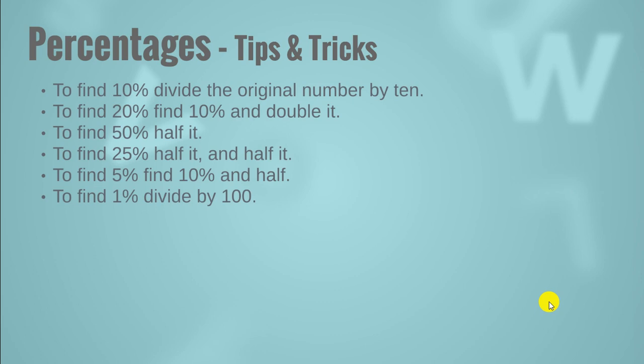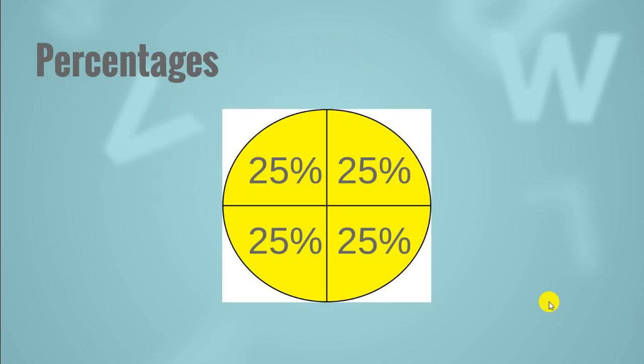To find 25%, half the value you get by finding 50%, which means that just divide it by 2 and then again divide it by 2. To find 5%, find 10% and then whatever the answer you get just half it. To find 1%, divide by 100. You do not need to get yourself involved in extra activities. Let's move forward.